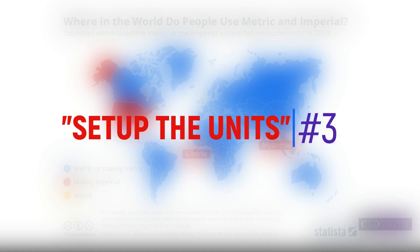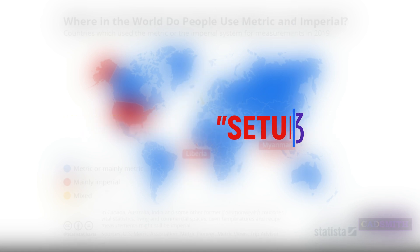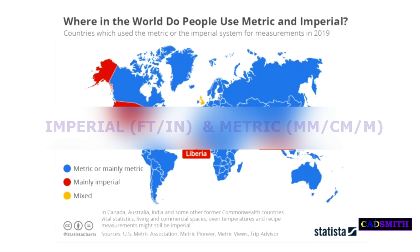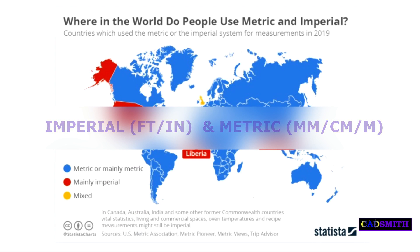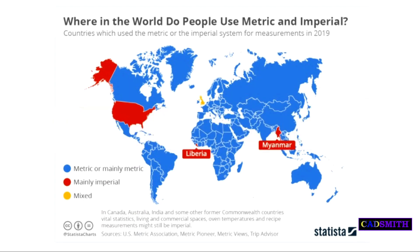AutoCAD has adapted the two systems of units of measurement used around the world: the Imperial, which uses feet and inches, and the Metric System, which uses millimeters, centimeters, and meters. Almost all countries around the world use the metric system. According to statistics, there are only three countries left that still use the Imperial System of Measurement — the US, Liberia, and Myanmar. So if you live in these places, you probably need to use inches.